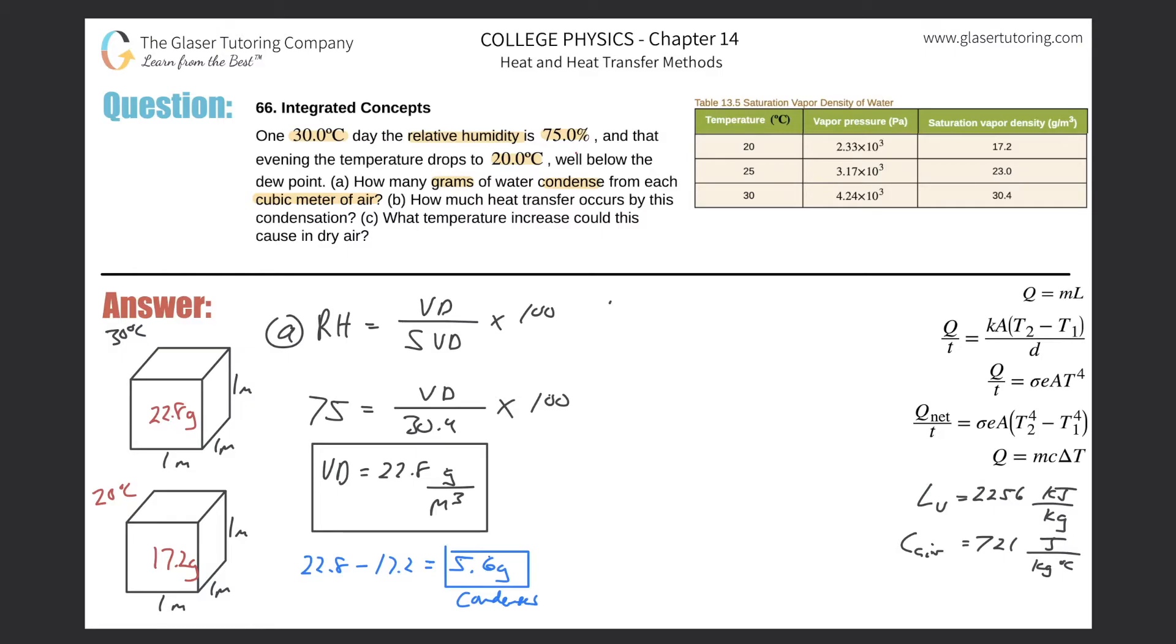So now let's take a look at letter B. What does B want us to do? It says how much heat transfer occurs by this condensation. So basically we're talking about a gas turning into liquid. So we're talking about a phase change. You know that that's the phase change formula. The heat involved is going to be equal to the mass multiplied by the latent heat of vaporization since we're going from gas to liquid.